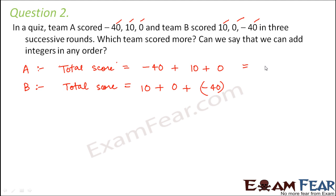So when you add these, what do you get? So the total score here is minus 30 and the total score here is minus 30 again.